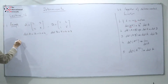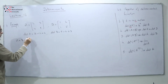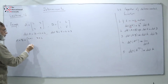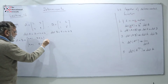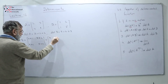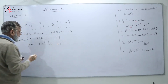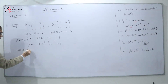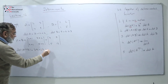Now I find A plus B. I can add two matrices when they are the same size. I compute 2 plus 1, 3 plus 2, 4 plus 1, and 8 plus 5, giving the matrix 3, 5, 5, 13. I find the determinant of A plus B: 39 minus 25 equals 14.